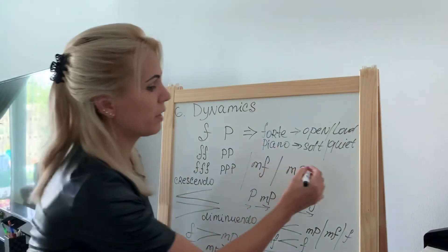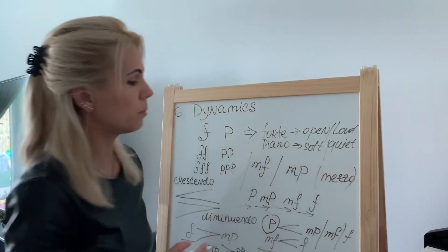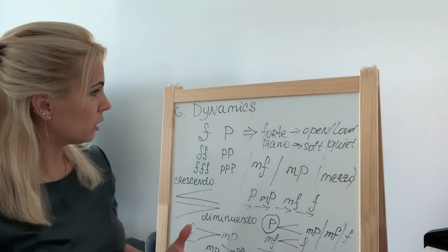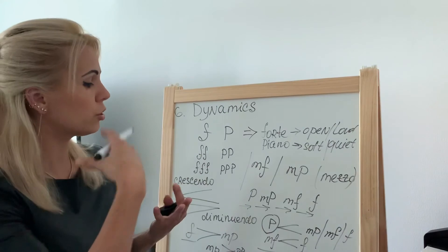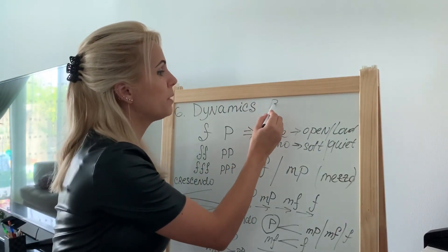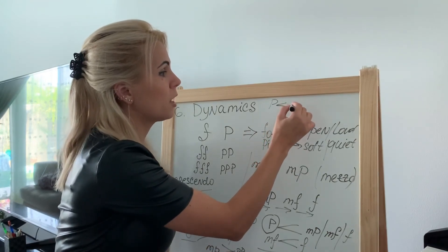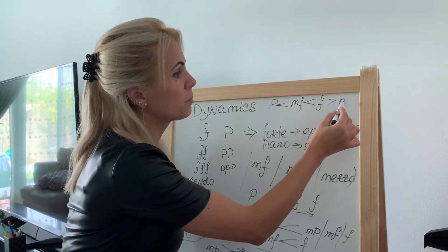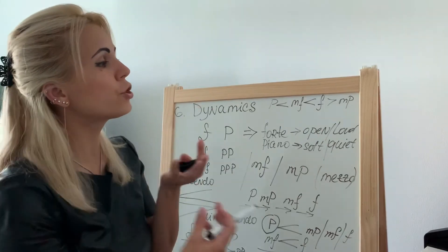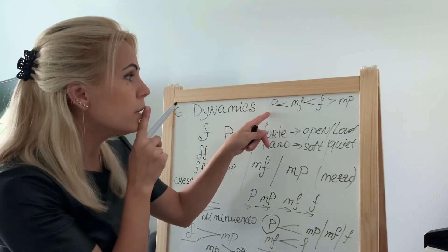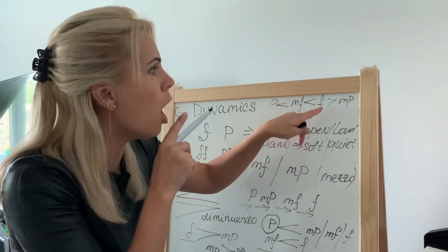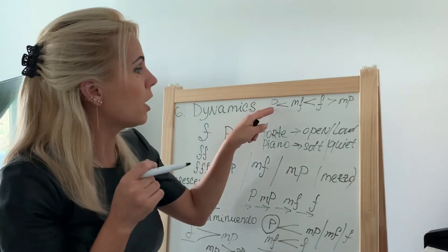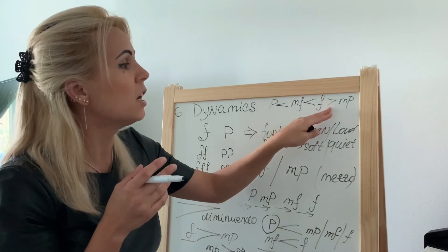By the way, you never write out the full word mezzo — you always write just the first capital letter. For a gradual dynamic change, you might write: piano, then crescendo toward mezzo forte, crescendo toward forte, then diminuendo toward mezzo piano. Singing Twinkle Twinkle Little Star this way — up above the sky so high, like a diamond in the sky — demonstrates a gradual increase followed by a gradual dying out of the dynamic.